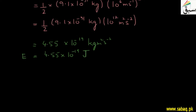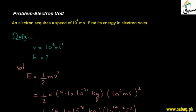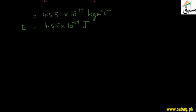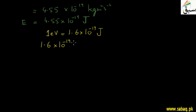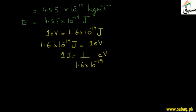The question asks us to find the energy in electron volts. We know that one electron volt is equal to 1.6 into 10 raised to the power minus 19 Joule. We interchange the sides so that one Joule is equal to 1 divided by 1.6 into 10 raised to the power minus 19 electron volts.